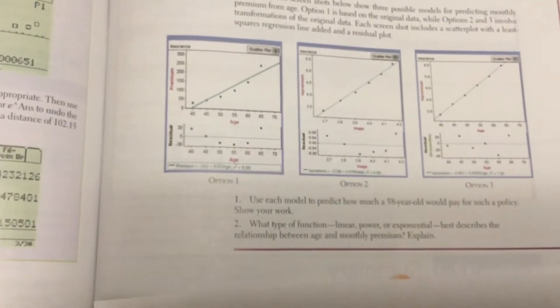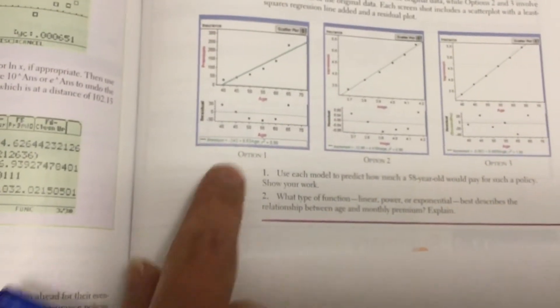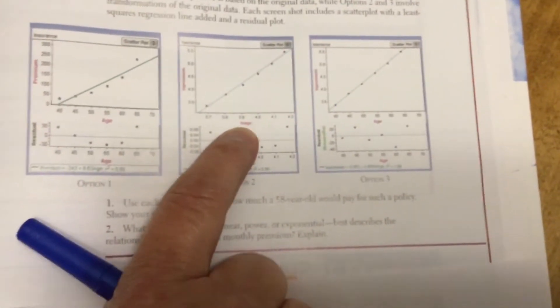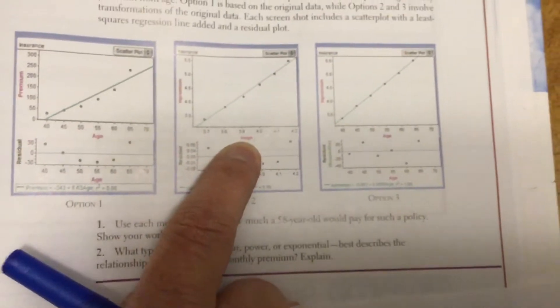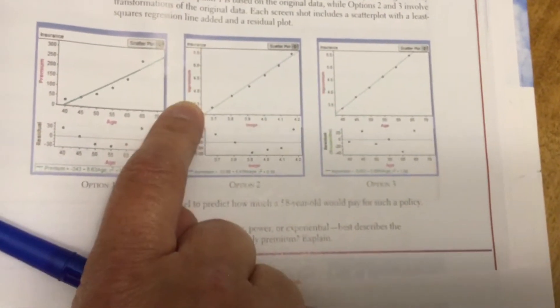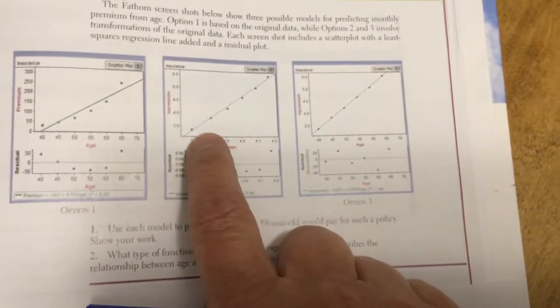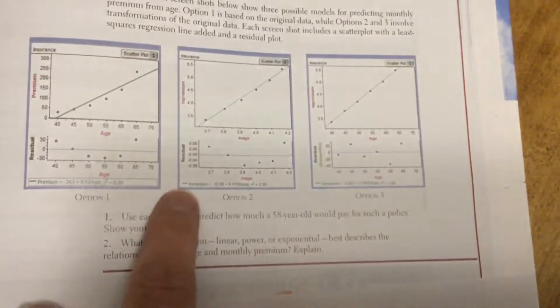But you'll notice our residual has a pattern. So maybe a linear is not the best regression to use. So what we're going to do is we're going to natural log all the ages and all the premiums. So when we come over here, we can see that we took the LN or the natural log of all the ages and the natural log of all the premiums, and I'll talk about natural logs in a second. So now you'll notice it's looking a little straighter.